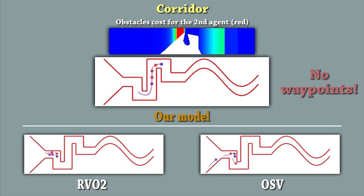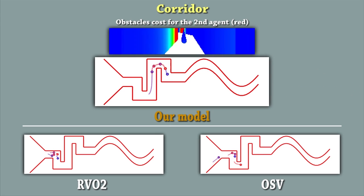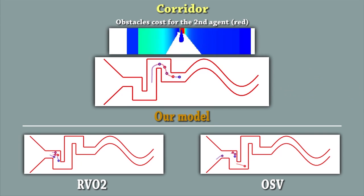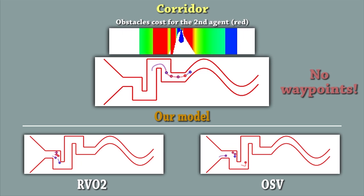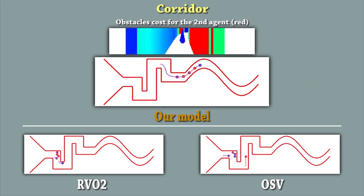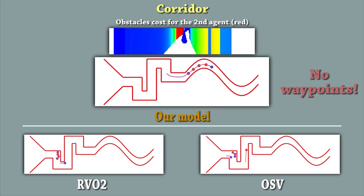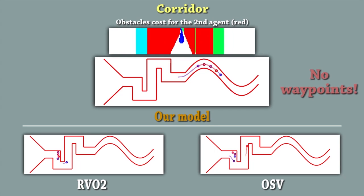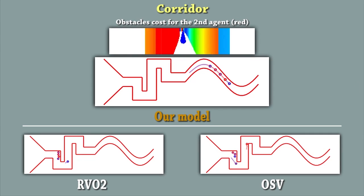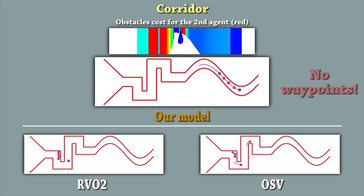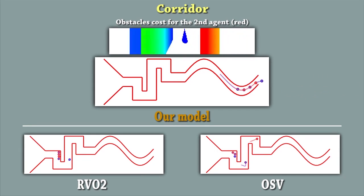We can notice how the obstacles cost function and, consequently, its gradient help the agent to identify and avoid potential collisions. The goal cost makes the agent reach its final objective. Note that no waypoints are required since our control loop is enough to steer agents through a relatively complex environment such as this one.